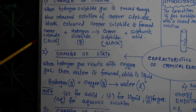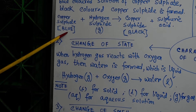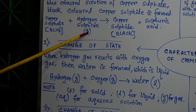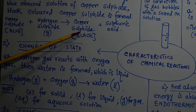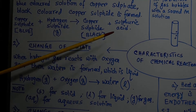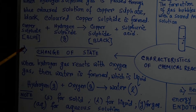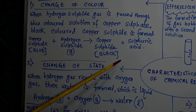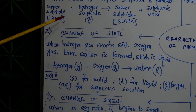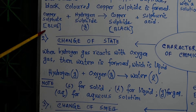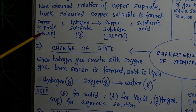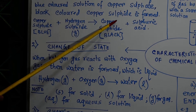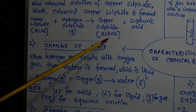The word equation is: copper sulfate (blue, aqueous) + hydrogen sulfide (gas) → copper sulfide (black) + sulfuric acid. Initially, the color of the solution is blue due to the presence of copper sulfate. But when copper sulfate reacts with hydrogen sulfide, it forms copper sulfide which is black in color. That's why the resultant solution will be black.